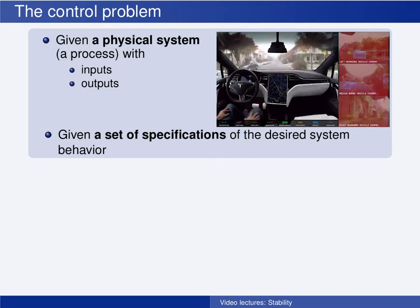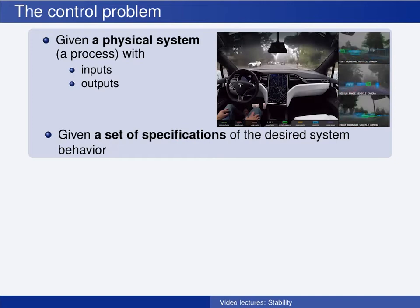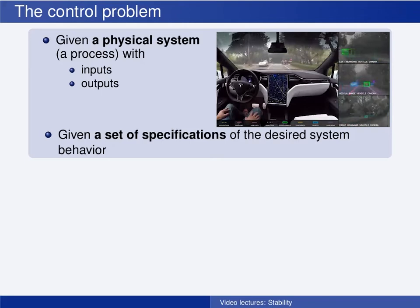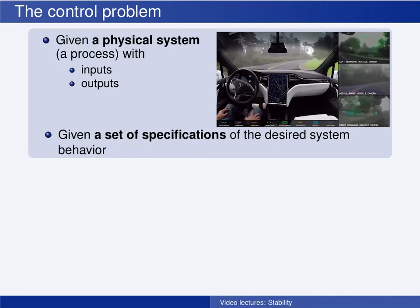The system has some inputs that we may use to control the system, and some outputs given by the sensors which tell us about the state of the system. We are given a set of specifications of the desired behavior of the system. This could be to keep the temperature of a room at a constant reference value, the concentration of a substance in a chemical process at a certain value, or keep the speed of a car constant when designing a cruise controller, or alternatively the distance to the car ahead should be kept constant.